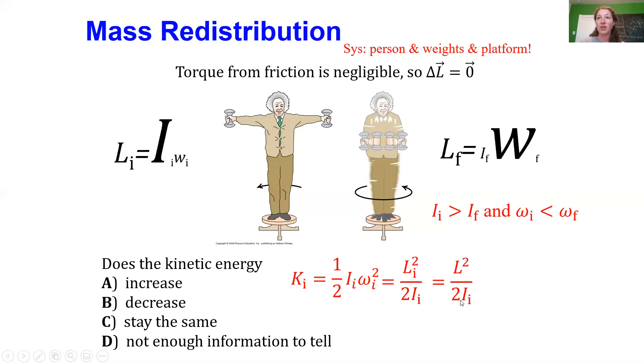So I start off with a relatively big number in the denominator, but then when I look at the final kinetic energy, now the number in the denominator has decreased, making the overall kinetic energy increase.